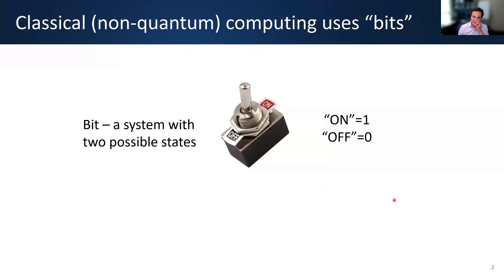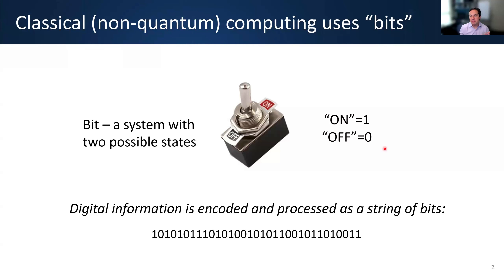Before talking about qubits, let's talk about bits — classical bits or non-quantum bits. A bit is just a system with two possible states. It's a switch that could be on or off, and you could call that one or zero. When you have digital information — anything in your phone or on your computer — all that information is encoded and processed as a long string of bits. There might be a bunch of zeros and ones that could represent a bit of video, an image, a song that you're streaming, a Word document, or a presentation. All the information is encoded as these classical bits.